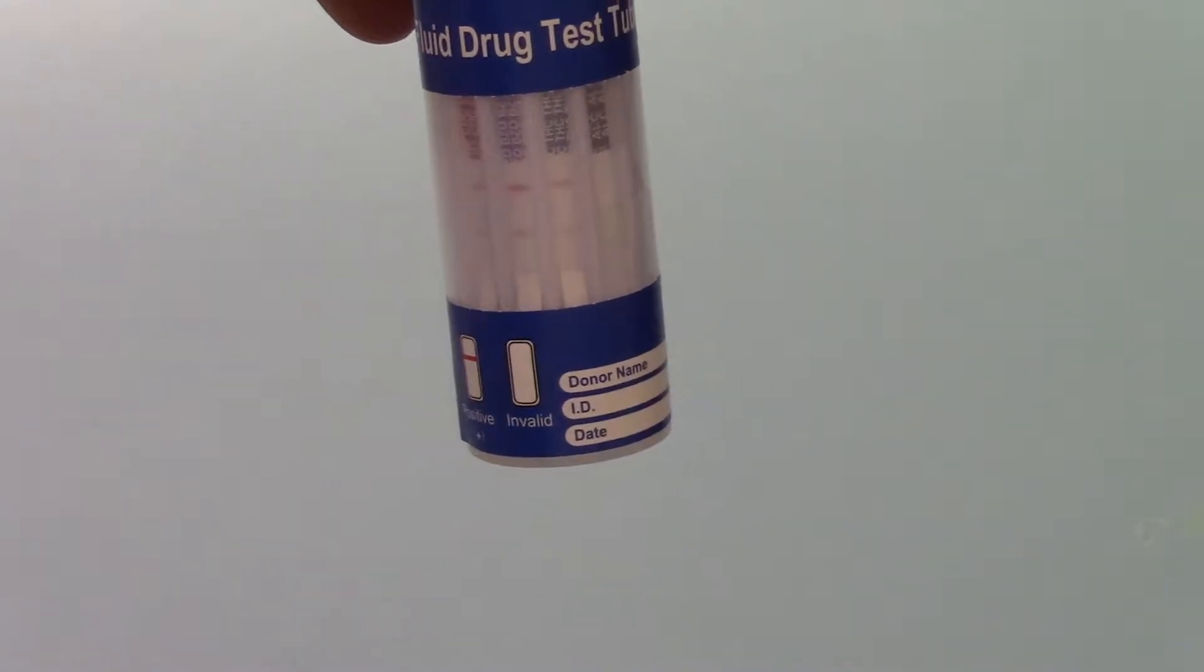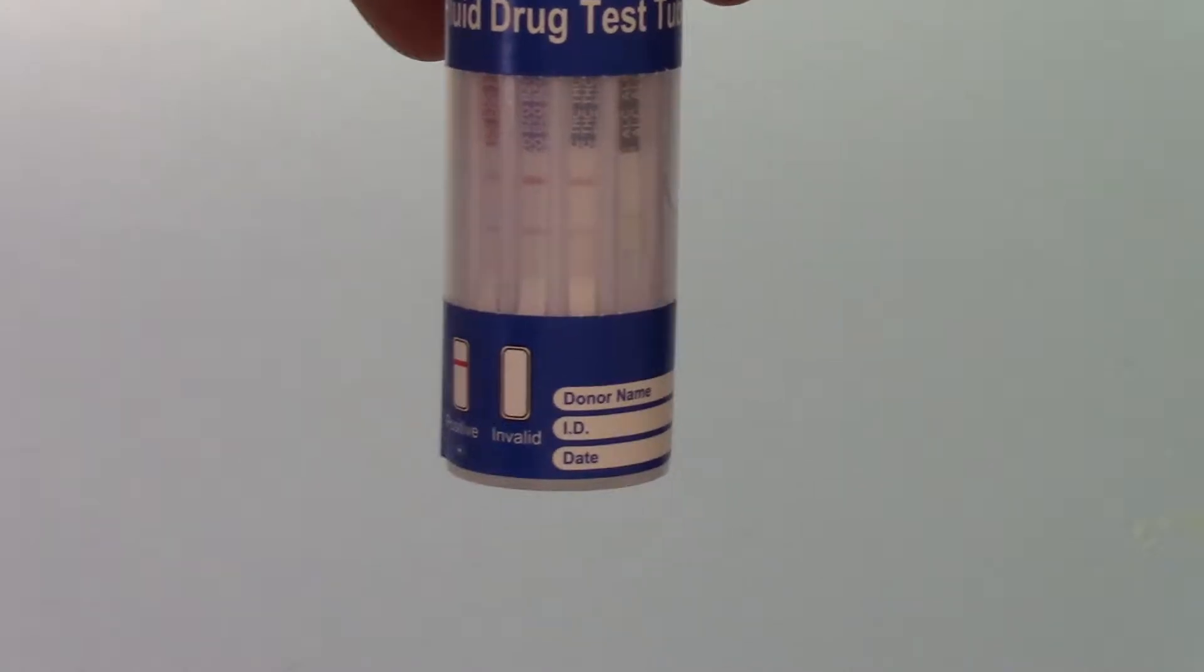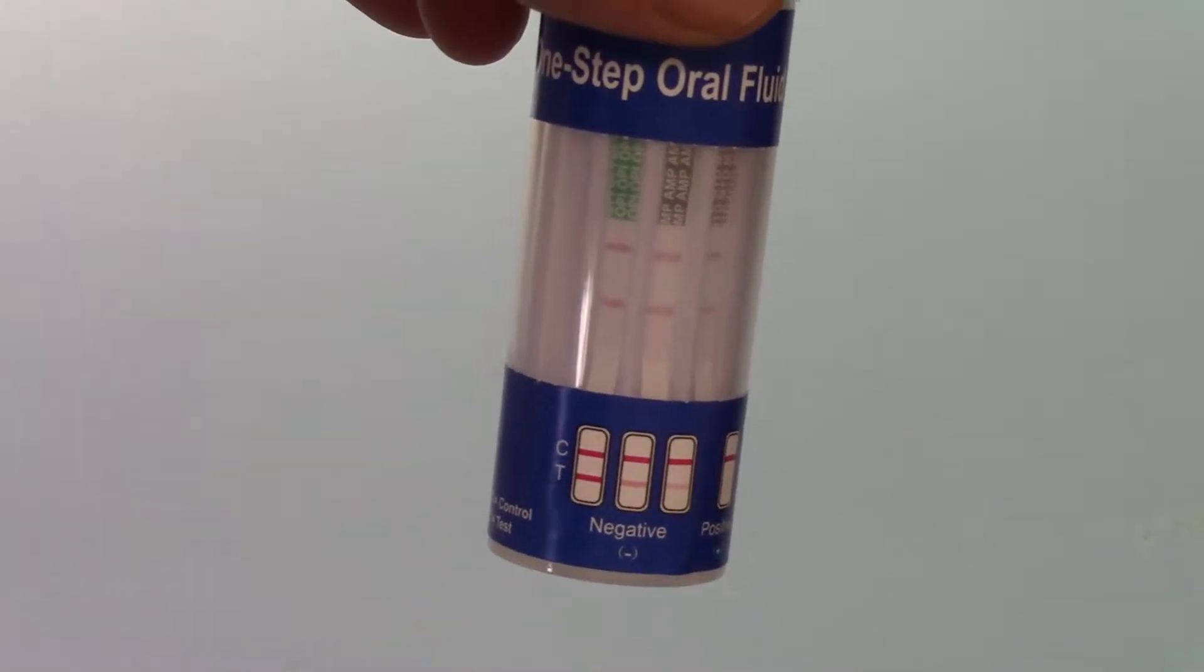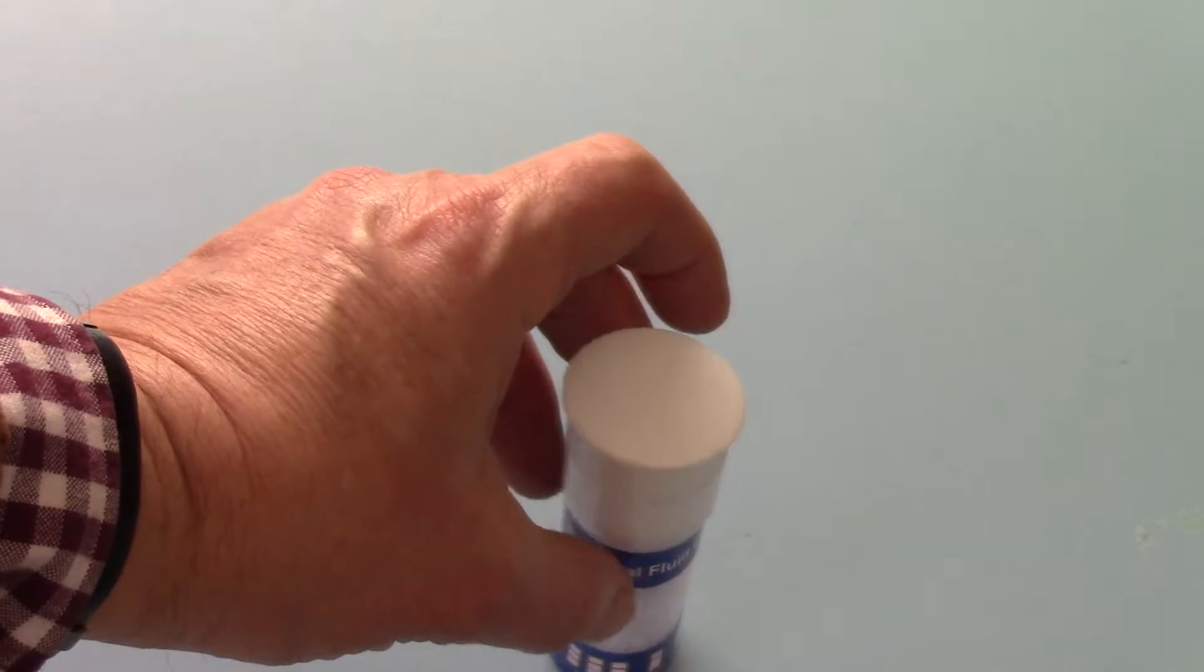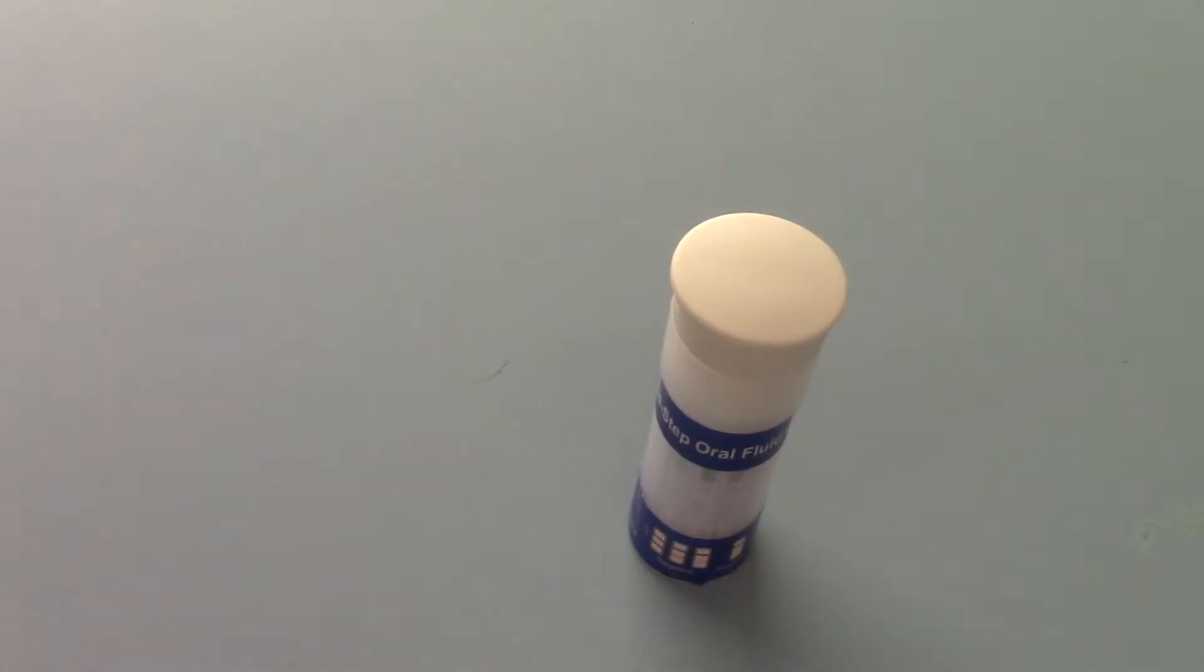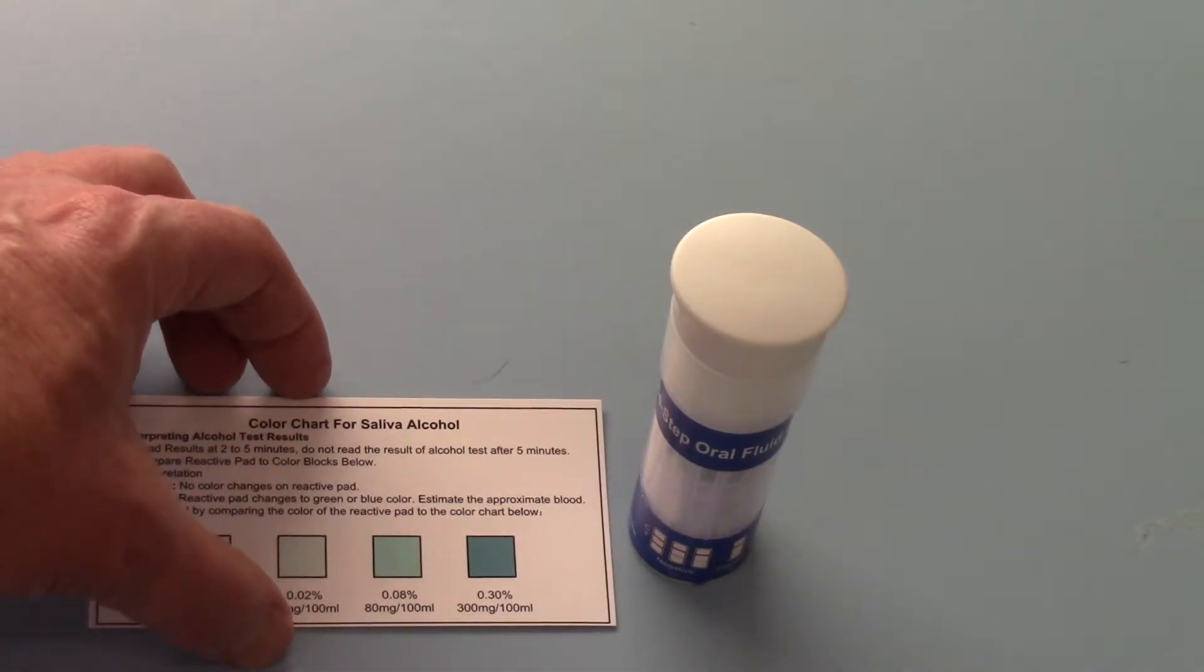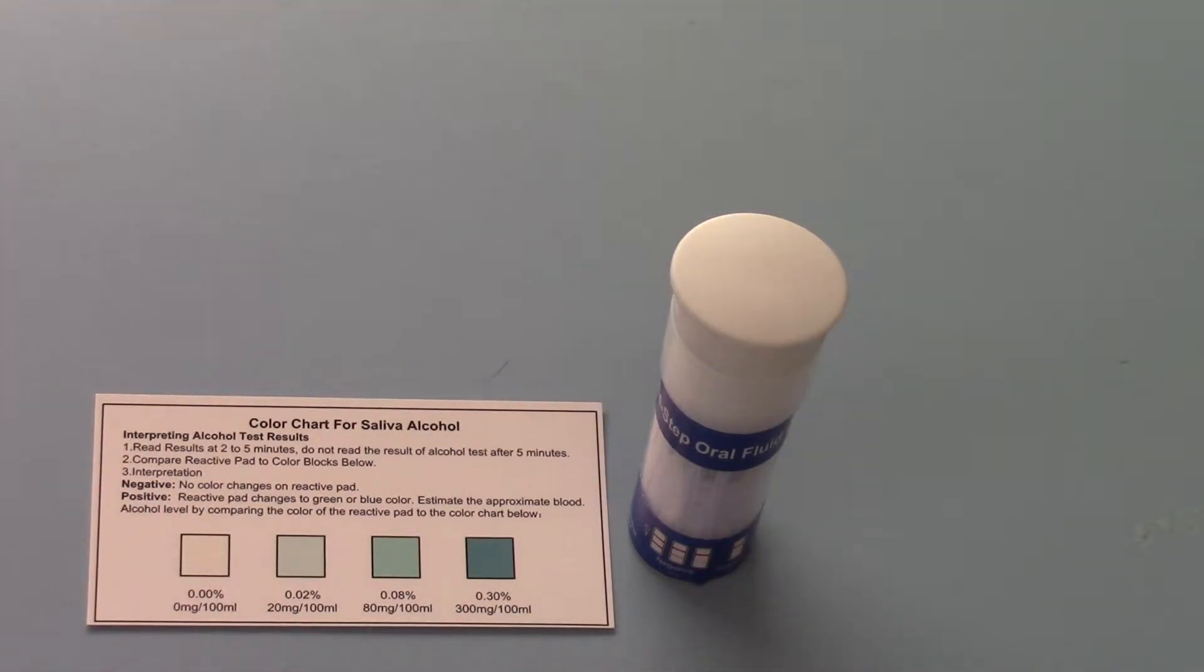But if you do leave it for hours what you can see is the development of very thin ghosts or T lines developing in some instances. You must interpret the results at the given window period for the results, which for this manufacturer is between five and ten minutes on this particular test. So anything that develops beyond that time has to be ignored. It's of no consequence. It's just the biotech continuing to run and develop. But you've got to read the results which are showing at that maximum read time which is ten minutes.